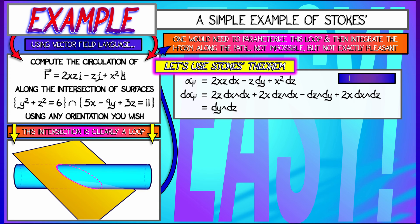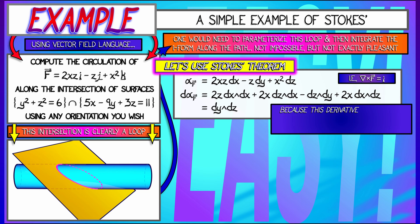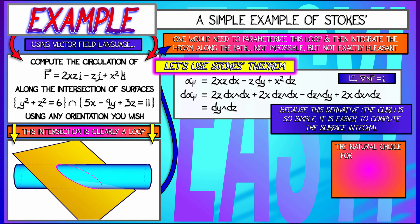That's really simple. That means in vector field language that the curl of f is the constant vector field i. It just moves to the right. Now because this derivative is so simple, this means that it's going to be easier to compute the surface integral, invoking Stokes.